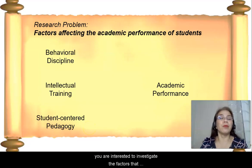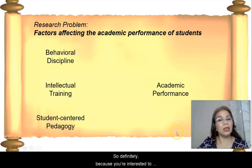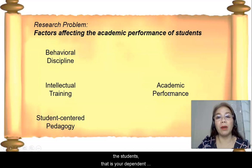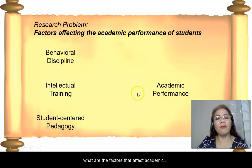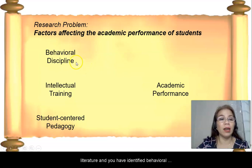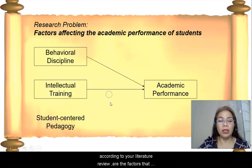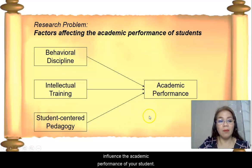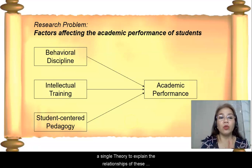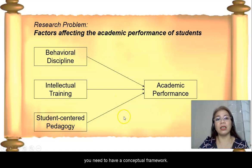To illustrate, for example, you are interested to investigate the factors that affect the academic performance of students. So, definitely, because you are interested to investigate the academic performance of the students, that is your dependent variable. Now, what are the factors that affect academic performance? According to literature, for example, you have reviewed the literature and you have identified behavioral discipline, intellectual training, and student-centered pedagogy. According to your literature review, these are the factors that influence the academic performance of your students. Now, the problem is we don't have a single theory to explain the relationships of these variables. So, to do this, you need a conceptual framework.